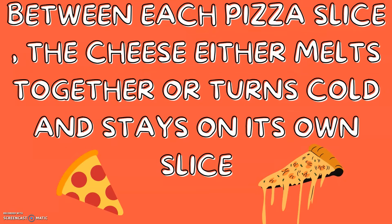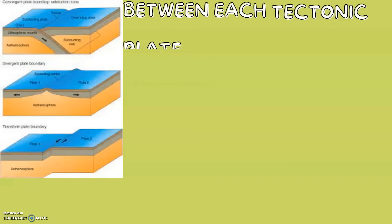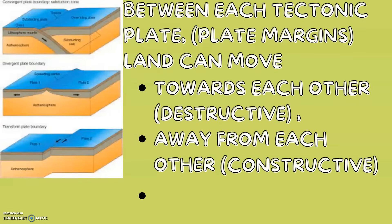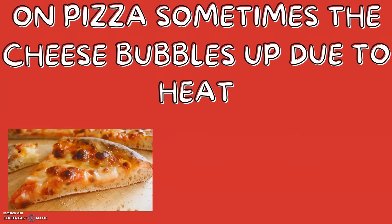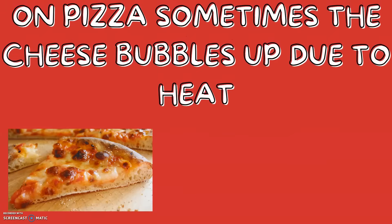Between each tectonic plate, which is called a plate margin, land can move towards each other, away from each other, or side by side. On pizza, sometimes the cheese bubbles up due to heat and pressure.